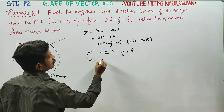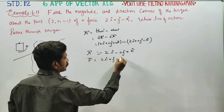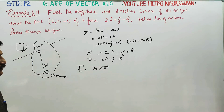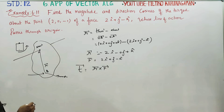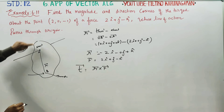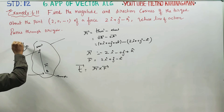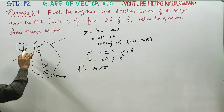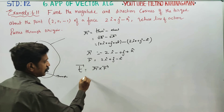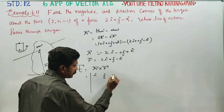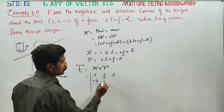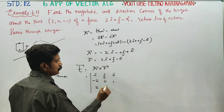F-vector is equal to 2i plus j minus k. Now I am going to find the torque vector: R cross F. Setting up the cross product as a determinant with i, j, k in the first row; R values −2, 1, 0 in the second row; and F values 2, 1, −1 in the third row.